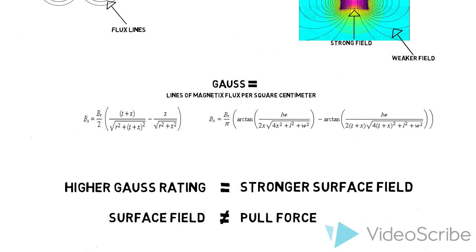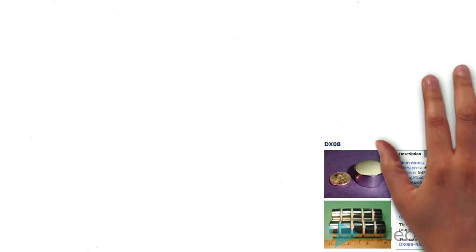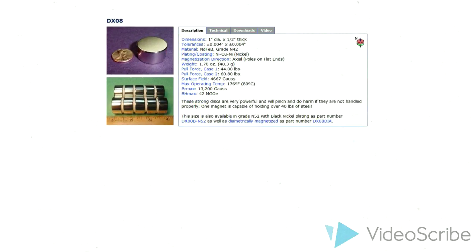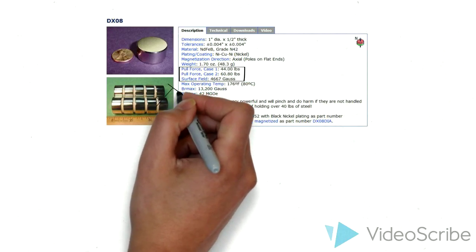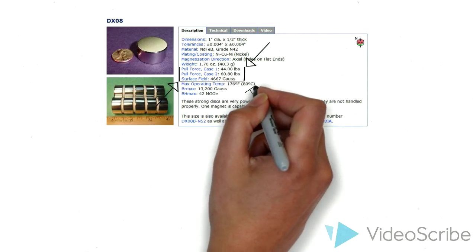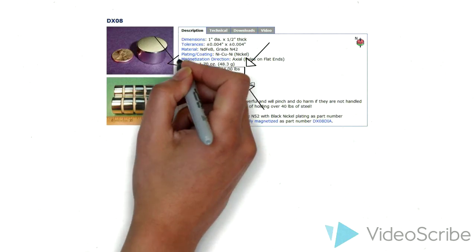Does this all seem a bit complicated? We can find all these numbers directly on our website for each individual magnet. No fancy calculations or formulas needed. Now you can impress your friends or boss by making smart, informed magnet purchases.